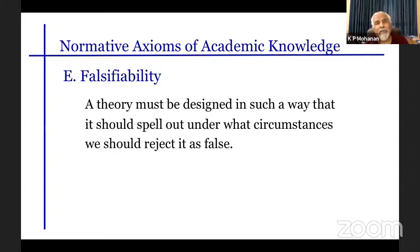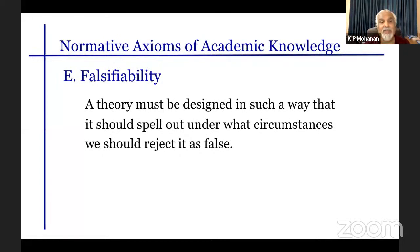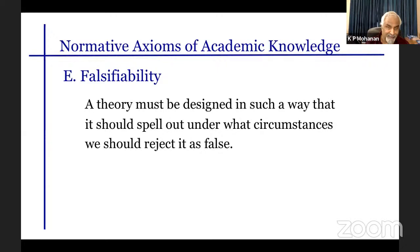A theory must be designed in such a way that it spells out under what conditions we would reject it as false. When you say X predicts Y, you should also say what is not possible — not simply what is possible, but what is not possible. If you observe the things it predicts are not possible, then the theory is false. A theory should say what kinds of things would make it false so that you can critically evaluate it. If you don't know how to prove a theory false even in imaginary circumstances, it is not an academic theory.